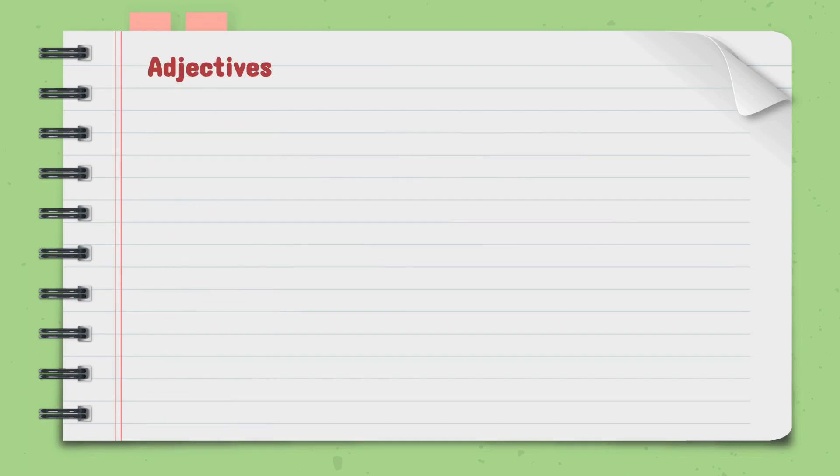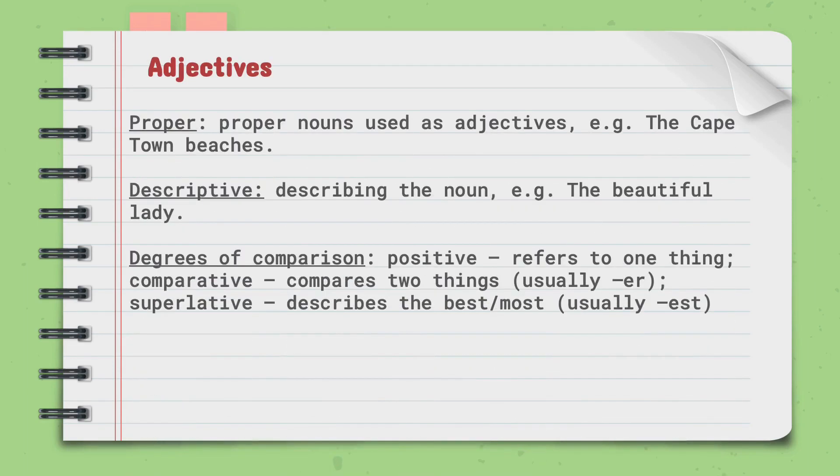Let us move on to adjectives. Proper nouns can be used as adjectives. For example, the Cape Town beaches. It can be used by describing the noun. For example, the beautiful lady.